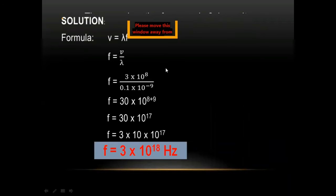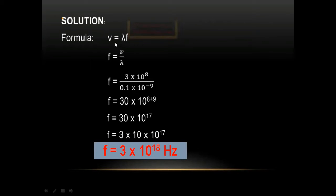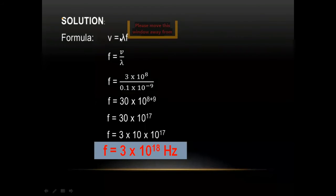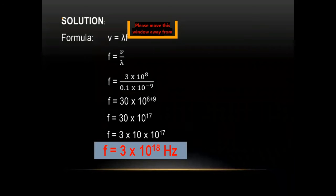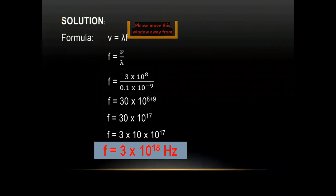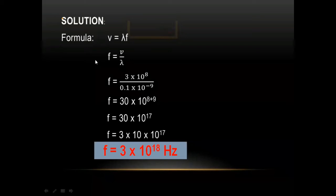For the solution of numerical 12.1, the frequency is required. Since wavelength and velocity are given, we use the wave equation v = λf. We are not using f = N/t or f = 1/T because the formula choice depends on the given values. We transform the formula to find f: since λ and f are multiplied, we shift λ to the other side.